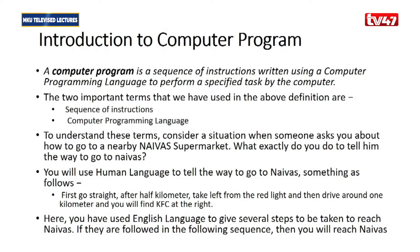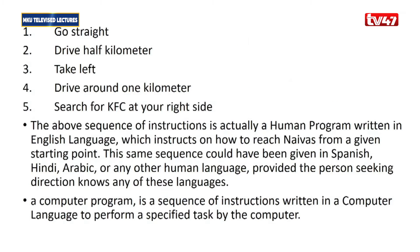Here you have used English to give several steps that one should take to get to Naiva's supermarket. We can summarize the steps as: one, go straight; two, drive half a kilometer; three, take left; four, drive another one kilometer; five, search for KFC at your right side. The above sequence of instructions is actually a human program, written in English, which instructs how to reach Naiva's from a given point.